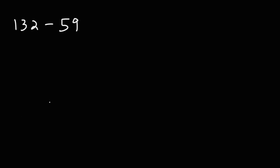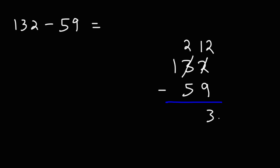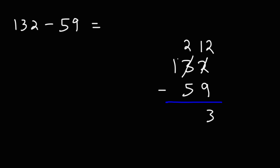Try this one: 132 minus 59. Starting with the first column, we have 2 minus 9, which will give us negative 7 — we don't want that. So let's borrow a 1 from 3. 3 minus 1 is 2, and the 2 becomes a 12. 12 minus 9 is 3. Now, 2 minus 5 won't work, so we're going to borrow a 1. This 1 becomes 0 and the 2 now becomes 12. 12 minus 5 gives us 7. So the answer is 73.